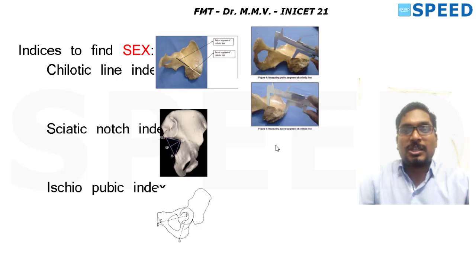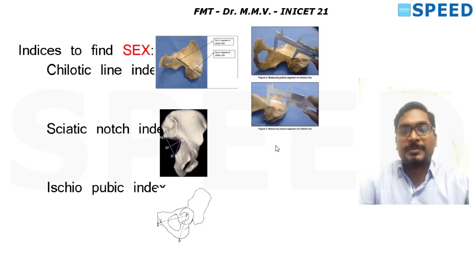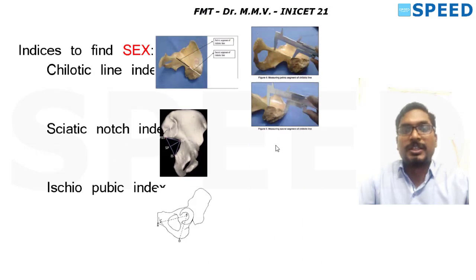Sciatic notch index = maximal depth of sciatic notch ÷ maximal breadth of sciatic notch × 100. All three CSI indices — cheilotic line, sciatic notch, and ischiopubic — use the multiplication factor 100.